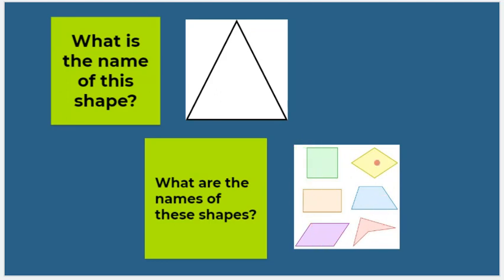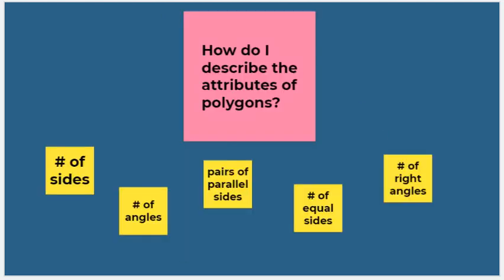And then all of these shapes have one name. They all have separate names as well, but there is one word that can describe all of them. They all have one, two, three, four sides, so all of these shapes are called quadrilaterals.